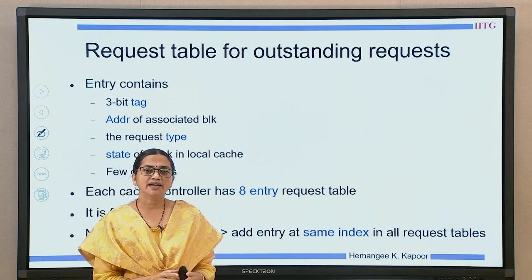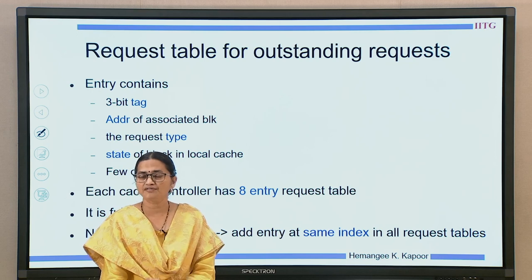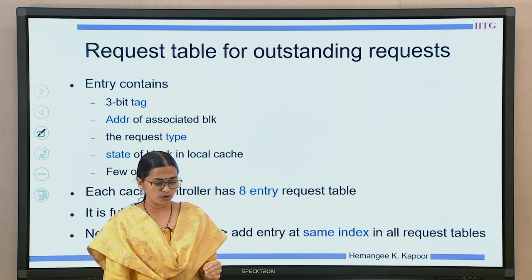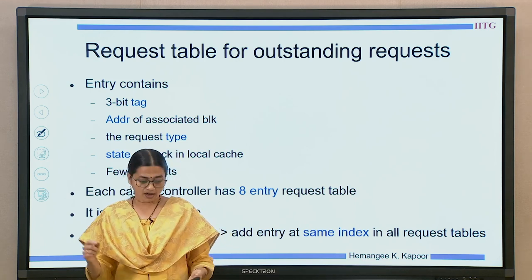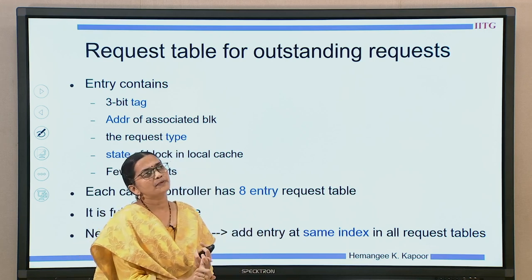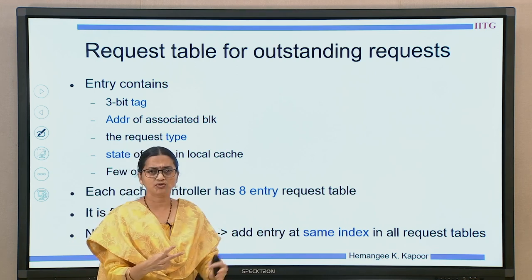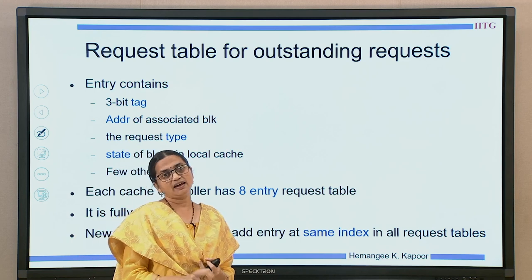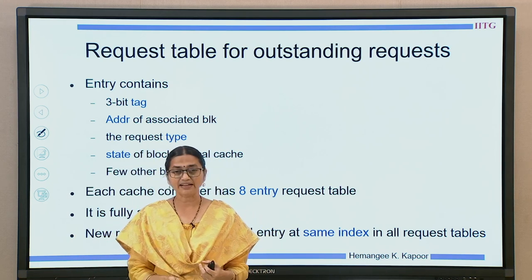These requests are kept in a table called the request table, and this request table is with every processor or every bus controller associated with every node. What does this table contain, or rather what should every request contain? Every request has the address for which that request is going. What is the type of request? That is bus read, bus redex, upgrade. So the type of request, and a tag assigned to it when it gets the tag — that tag information.